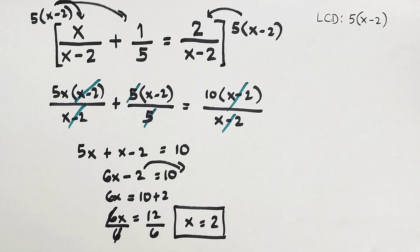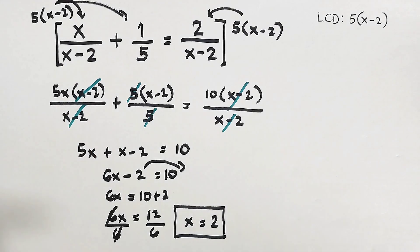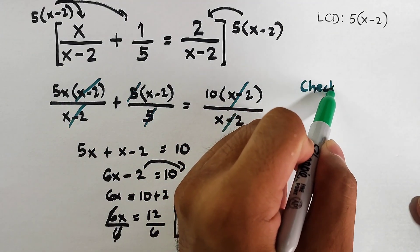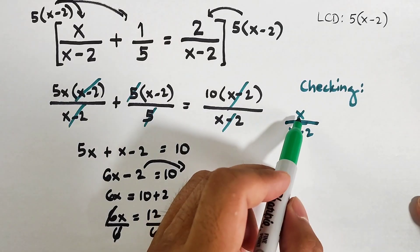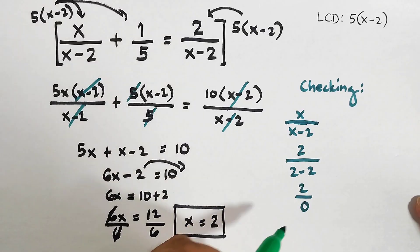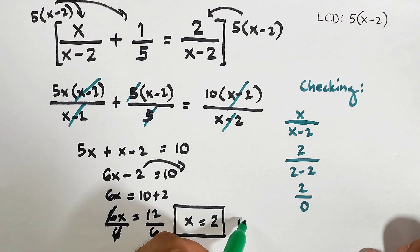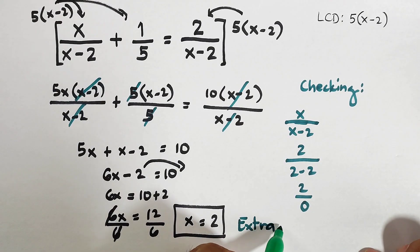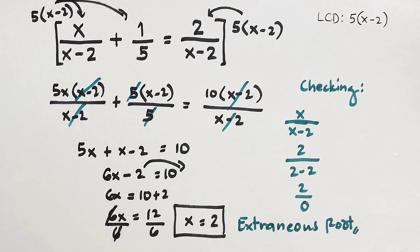Now, as I told you from the first example, let's check if this is an extraneous root. Let's substitute x here. When we put 2 in x over x minus 2, it becomes 2 over 2 minus 2. This is 2 over 0, meaning it's not allowed. So this 2 is an extraneous root or value of x. In other words, we don't have a definite solution for this equation. But we did solve the rational equation.